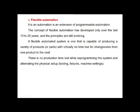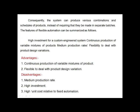The third type is flexible automation, which is an extension of programmable automation. The concept of flexible automation has developed over the last 15 to 20 years and the principles are still evolving. Flexible automation is capable of producing a variety of products with no time lost for changeovers from one product to the next. There is no production time lost while reprogramming the system or altering the physical setup, tooling, fixtures, and machine settings.